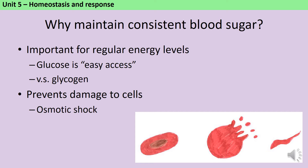That's fine for a plant cell because plant cells have strong cellulose cell walls which protect them, but animal cells don't have those. So if the level of glucose in the blood rises too high or falls too low, then the cells can either plasmolise and shrivel up because all the water is literally sucked out of them, or cytolyse and burst open because they absorb too much water. Neither of these is good, so it's important to maintain consistent blood sugar.